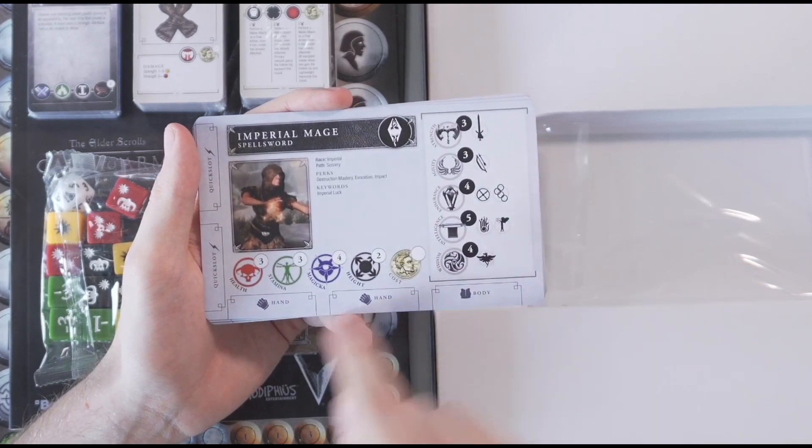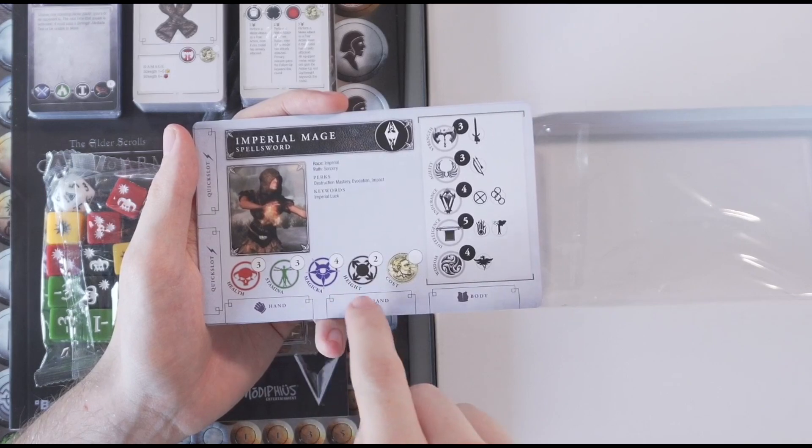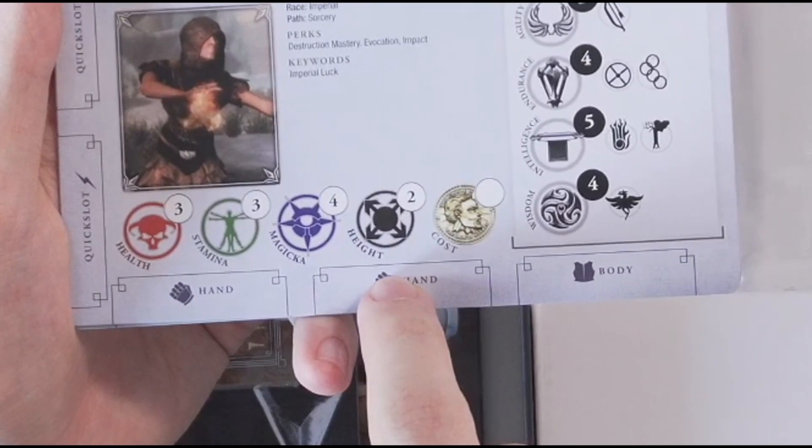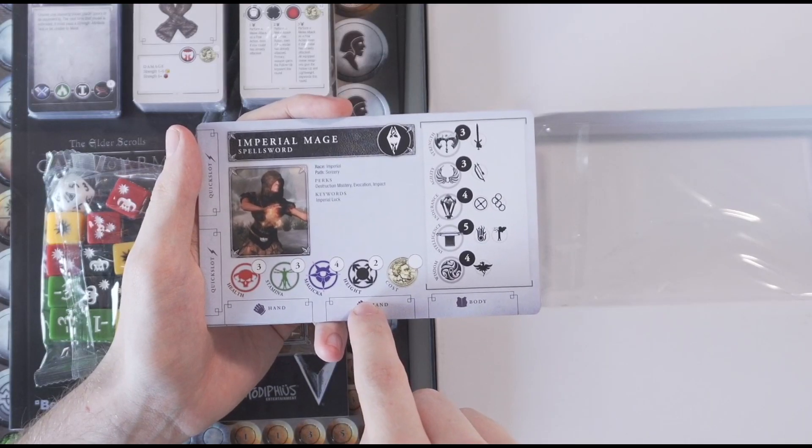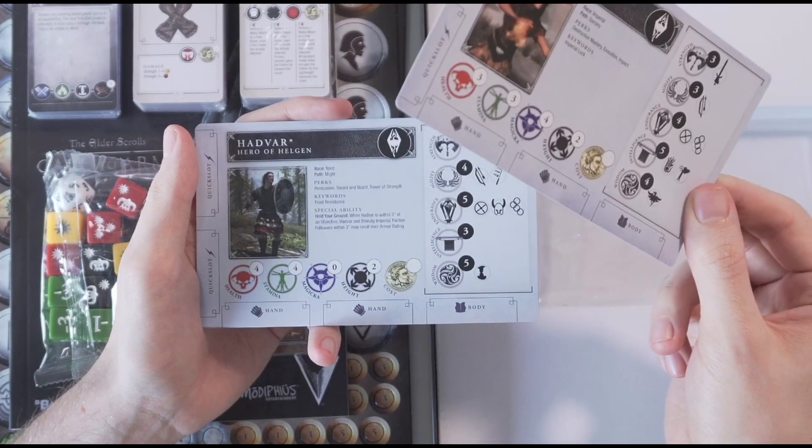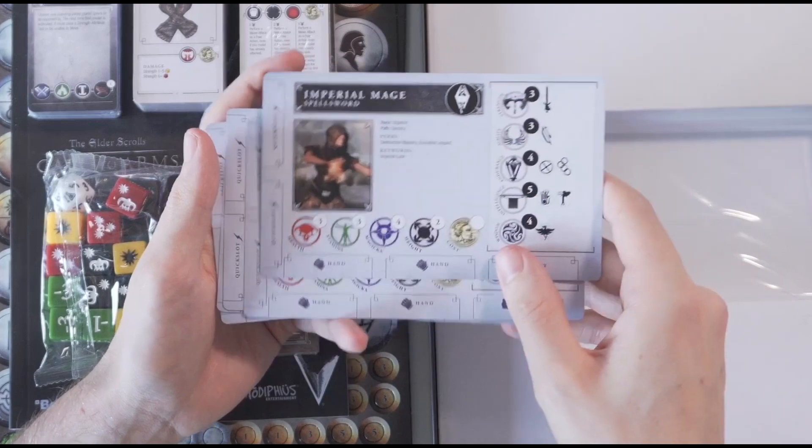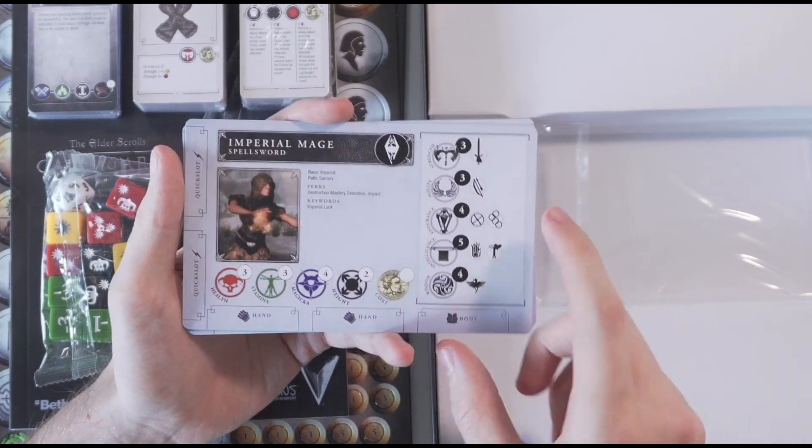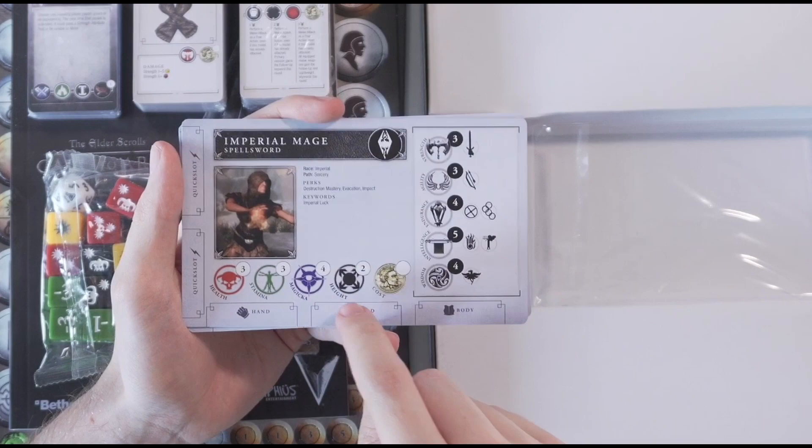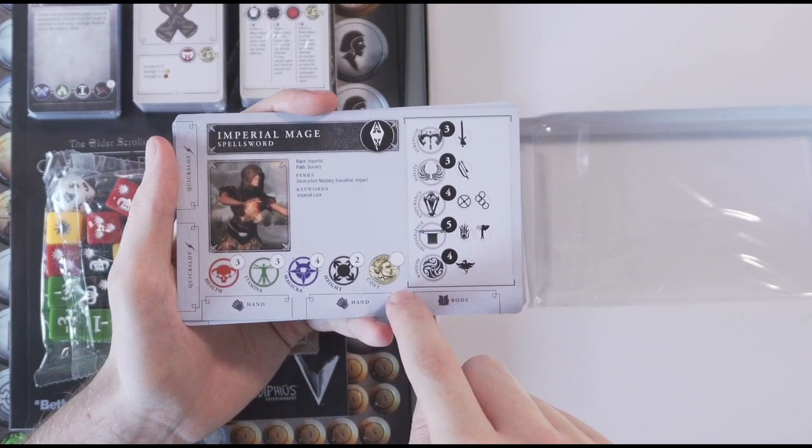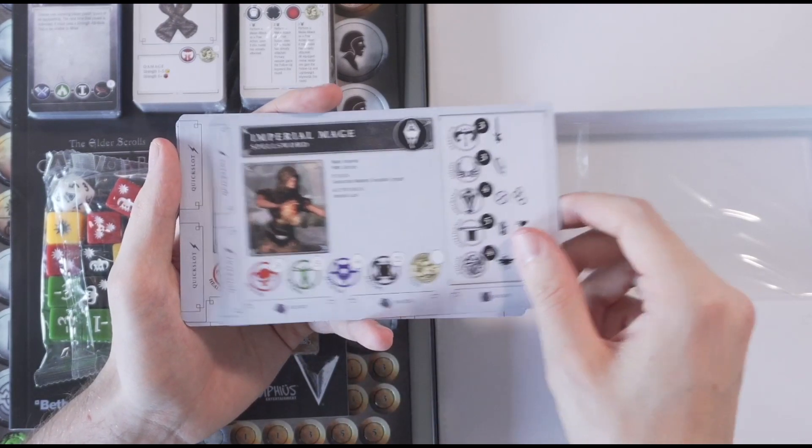So like the Imperial Mage has three health, three stamina, four magicka. A height of two? She has a height stat? Bit of a bloody dwarf, isn't she? Oh, all humans have a height of two. I don't know how height is going to affect people in this game. That's interesting though.